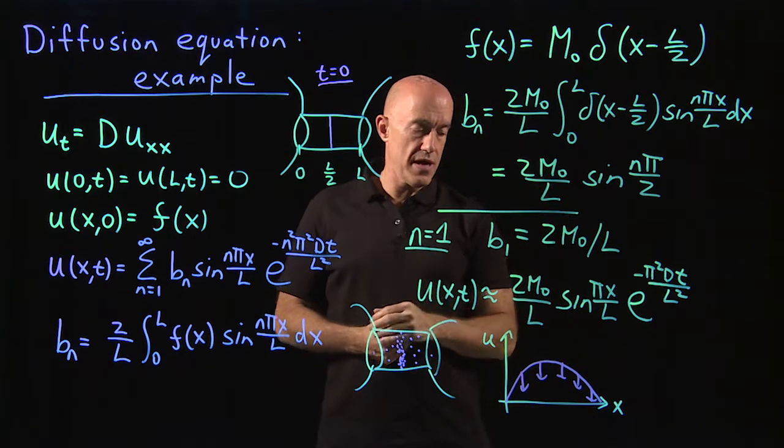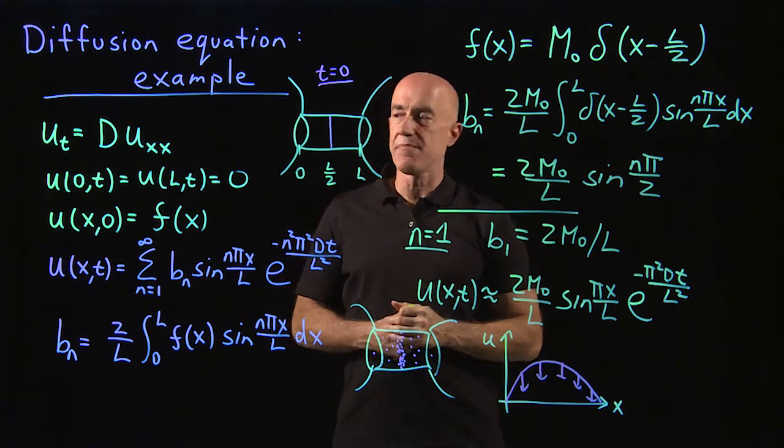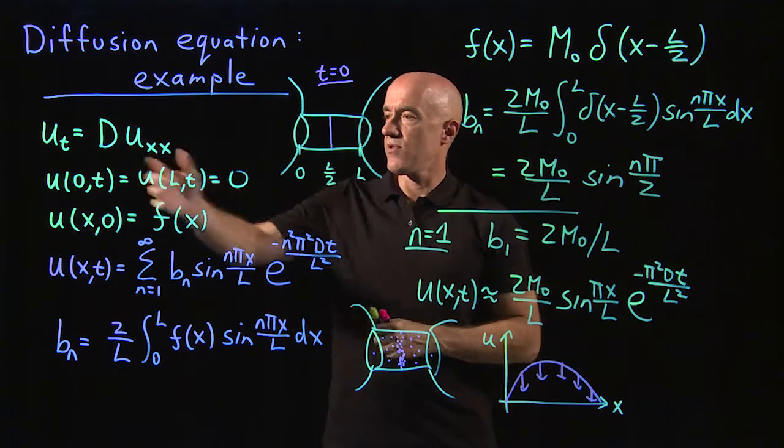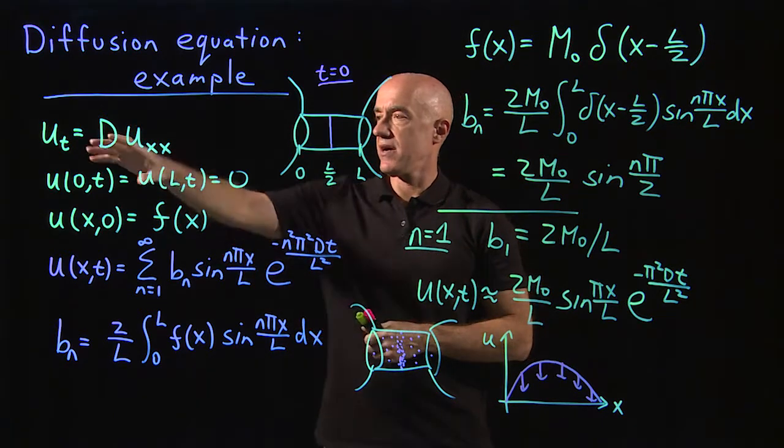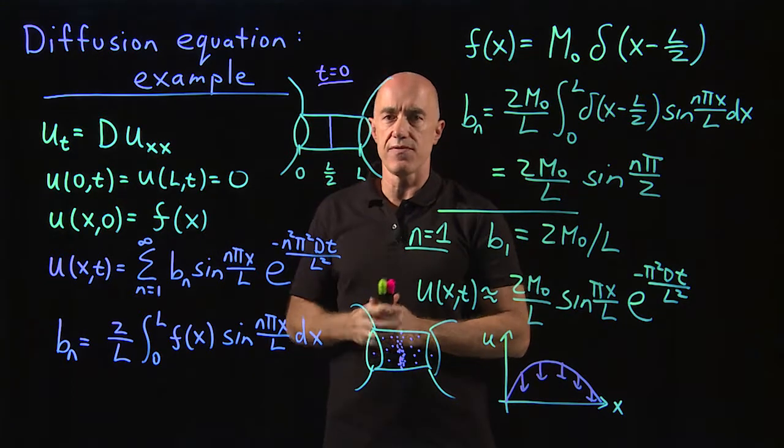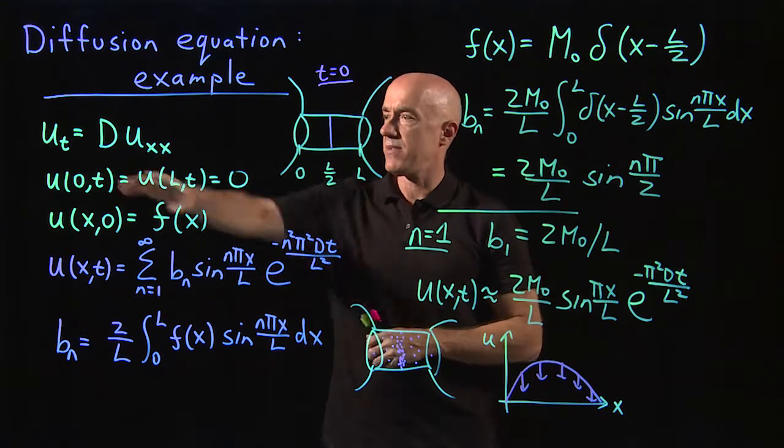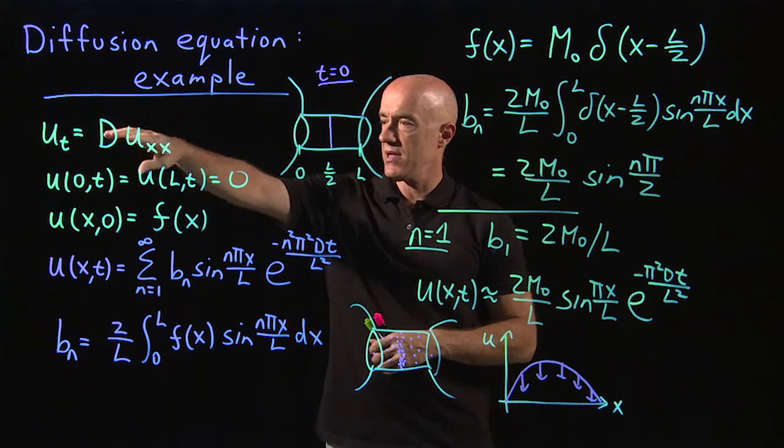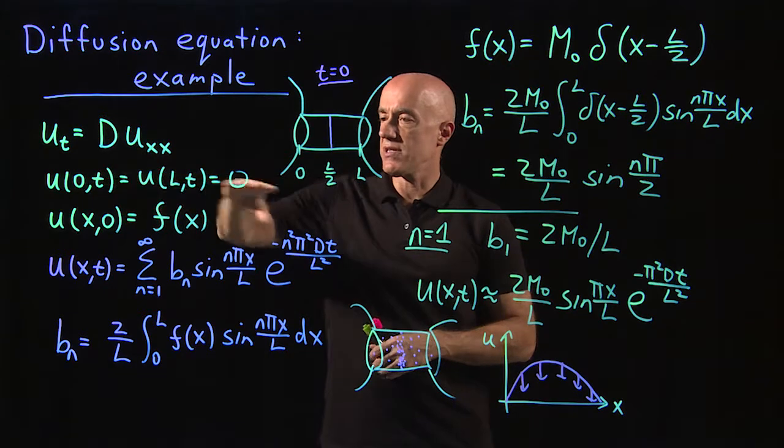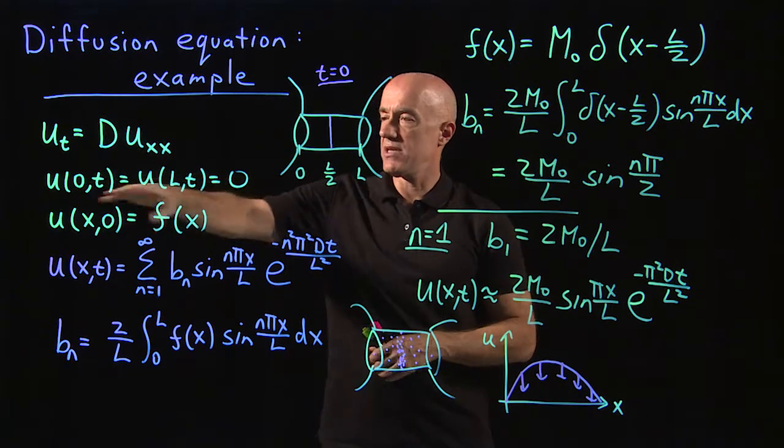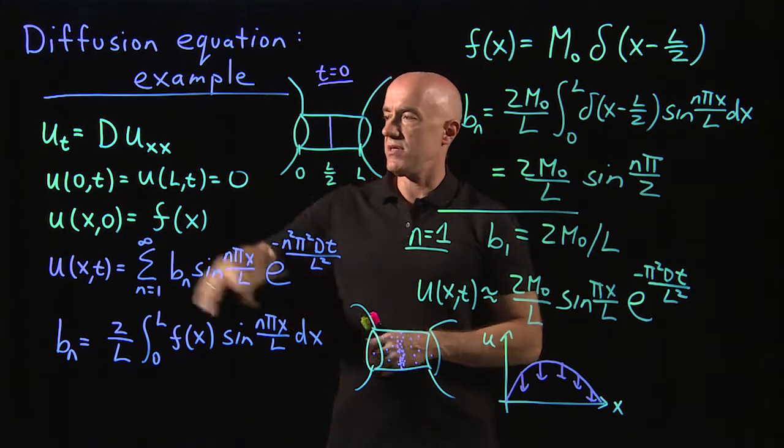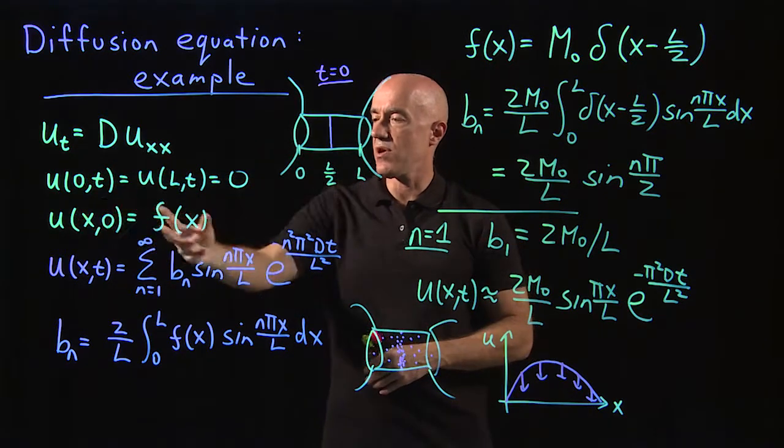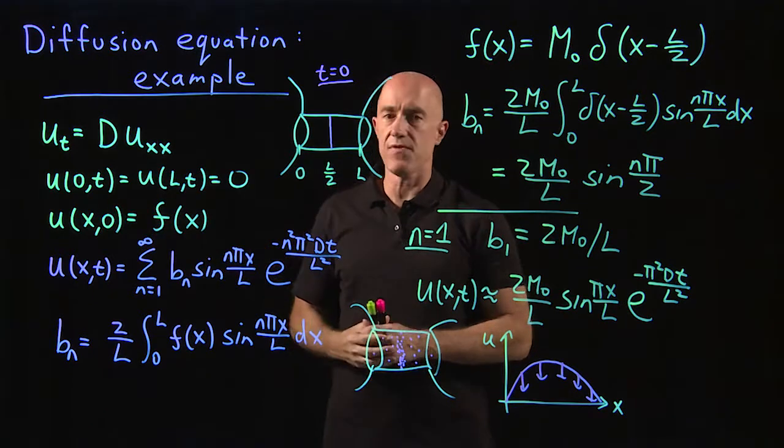So let me review then what this example is about. In the previous three videos, we derived the diffusion equation for diffusion of dye in a pipe. And then we've solved it using separation of variables. With the boundary conditions of the homogeneous Dirichlet boundary conditions where the two ends are connected to reservoirs. And some general initial condition for the concentration.